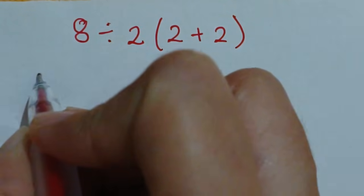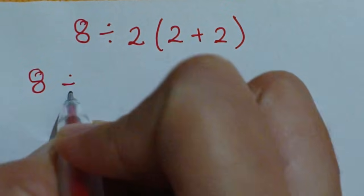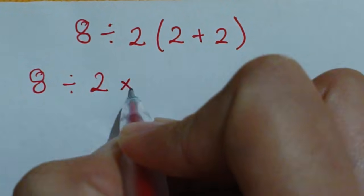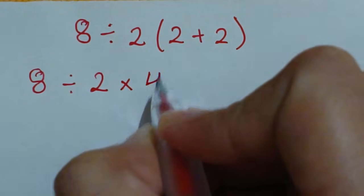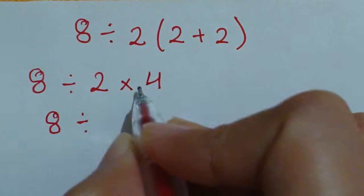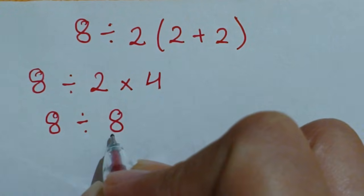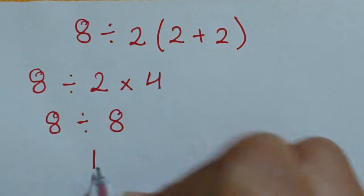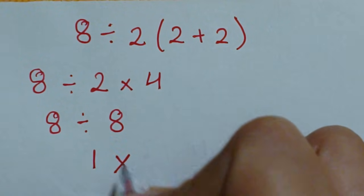So here, 8 divided by 2 times 2 plus 2, which is 4. So 8 divided by 2 fours are 8. 8 divided by 8, which is 1. So this is the wrong value.